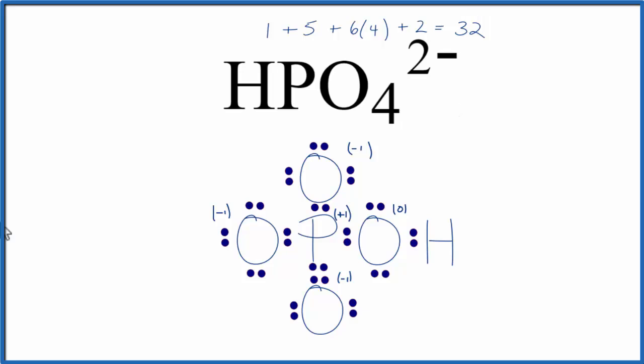But here's the difference: because we made this double bond here we need to update our formal charges. So the formal charge on the oxygen and the phosphorus have changed from minus one and plus one to both of these being zero. And that makes this a more favorable or likely Lewis structure for HPO4 2-.